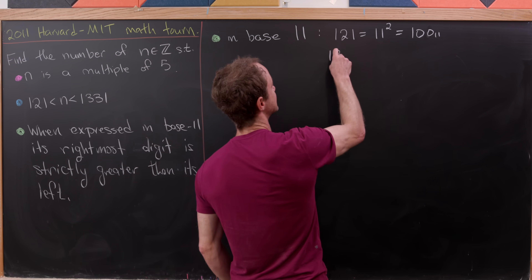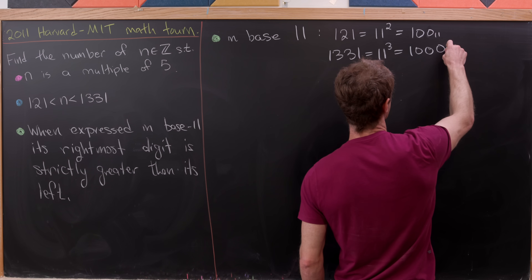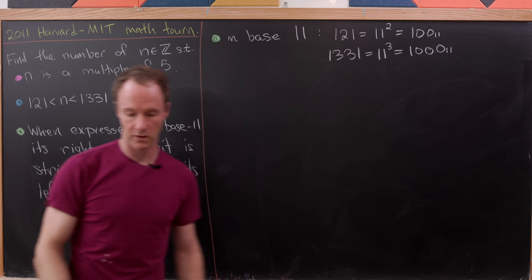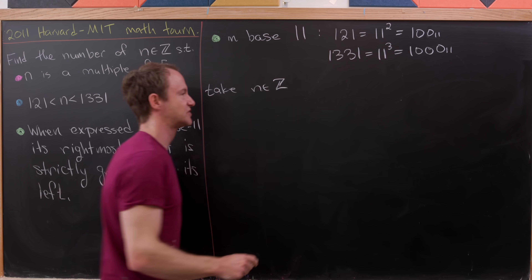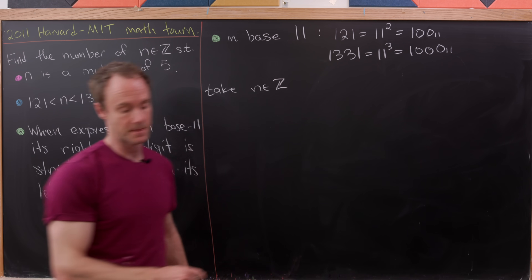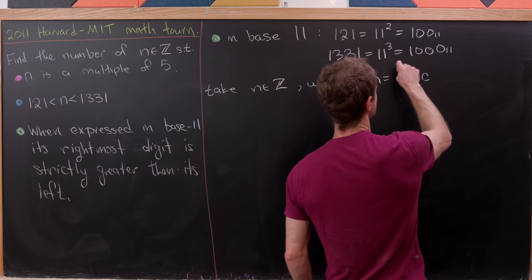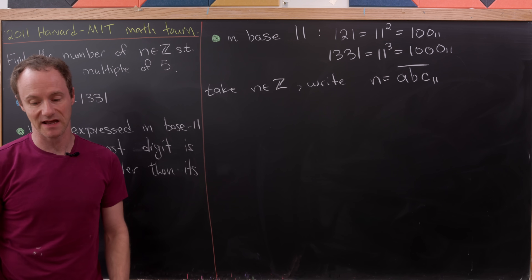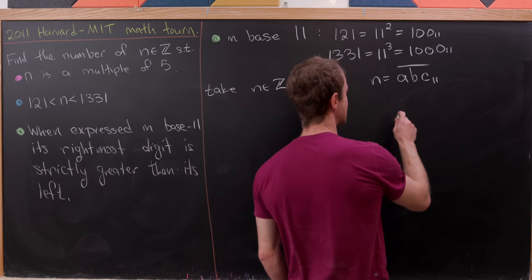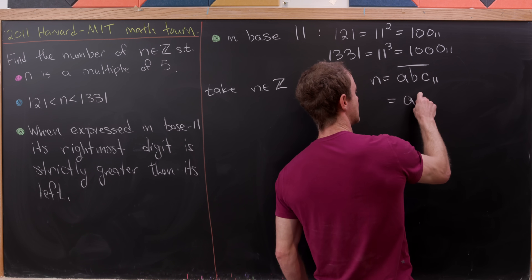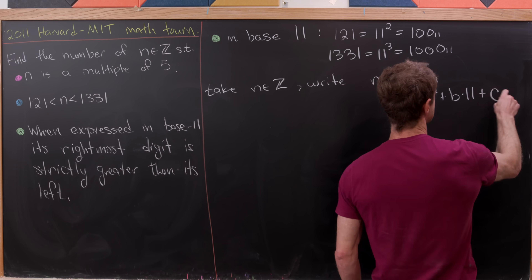Also in base eleven, 1331 equals eleven cubed, which is 1000 base eleven — written as one-zero-zero-zero base eleven. So next we want to take our integer n, which must satisfy these conditions, and write it in base eleven. That means we can write it as a three-digit number with digits a, b, c in base eleven.